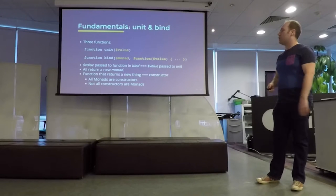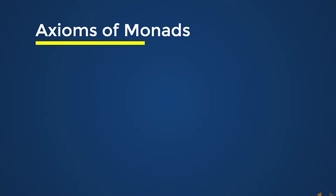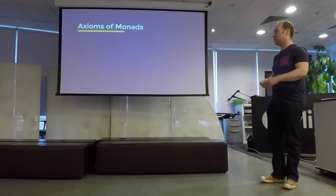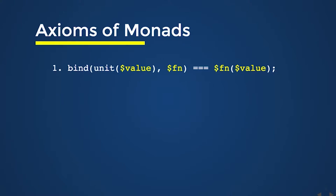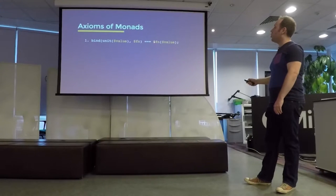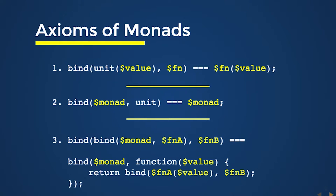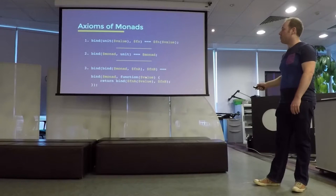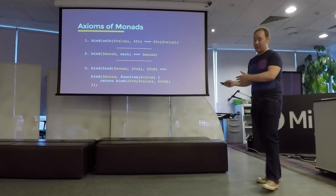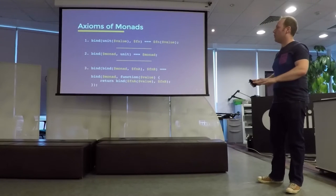But it's important to know that not all constructor functions are Monads — a constructor can return anything. So in order for some kind of object constructor to be a Monad, it has to meet some fundamental behaviours called axioms. The first is that if we call the unit function on some value and then bind some function to it, that's the exact equivalent of calling that function on that value. The second is that if we try to bind the unit function to some Monad, we just get the original Monad back unchanged. The third is a little bit tricky — if we bind some function to an existing Monad and then bind another function to that result, it's equivalent to composing those binds in a specific associative way. I still have trouble fully explaining that one.